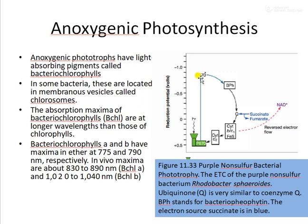When bacteriochlorophyll absorbs light energy, it gets excited and the energy is transferred to bacteriopheophytin, then to quinone, then to the cytochrome BF complex, cytochrome CT, and then it comes back to photosystem P870. During this process, succinate is added and fumarate is formed, and NAD+ is also regenerated. This is the process of anoxygenic photosynthesis in anoxygenic bacteria. Different bacteria may have slightly different electron transport chains, but this serves as one example.